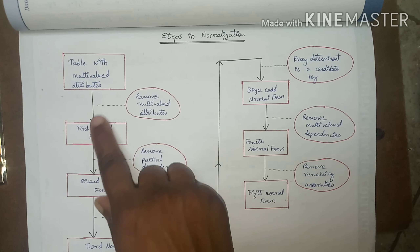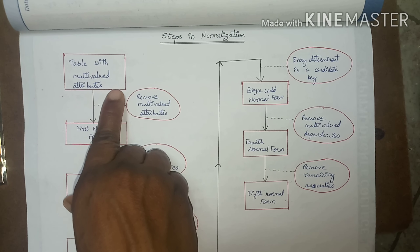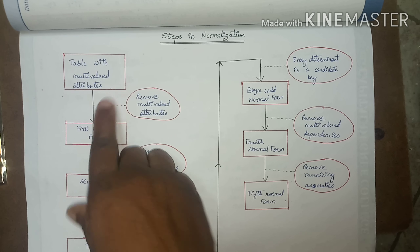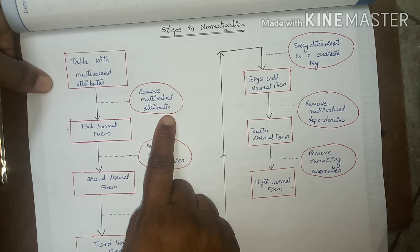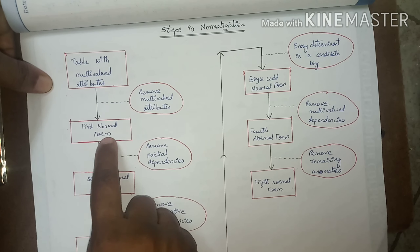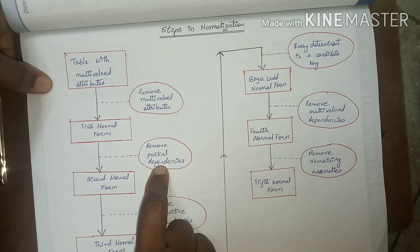First, we have a larger table with multi-valued attributes and all values are stored in a single table only. There is no decomposing to divide tables into smaller structures. If we remove multi-valued attributes from that larger table, then that table will be in First Normal Form.